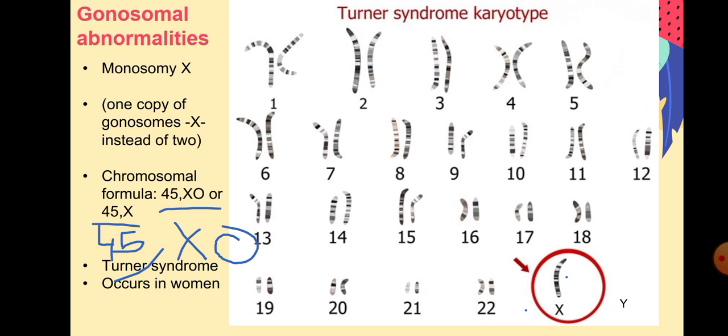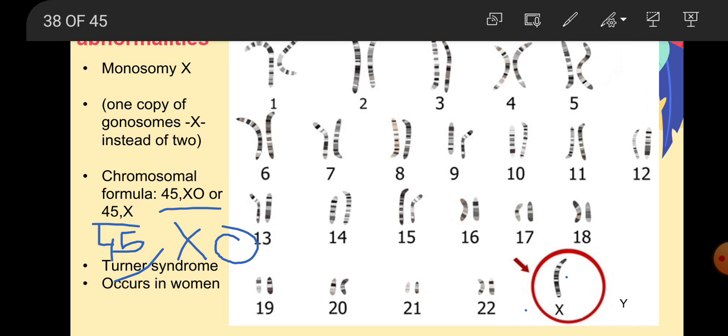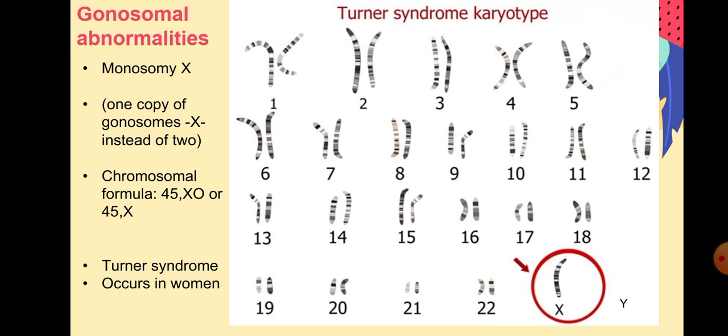As you can see, this individual has only one copy of X and there is nothing in Y. So this abnormality occurs in women only. And we call this disease Turner syndrome. Monosomy X is Turner syndrome.